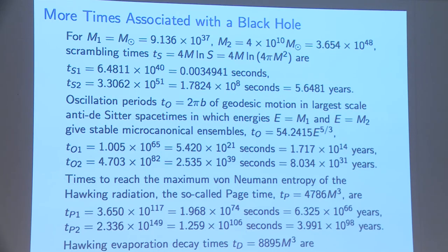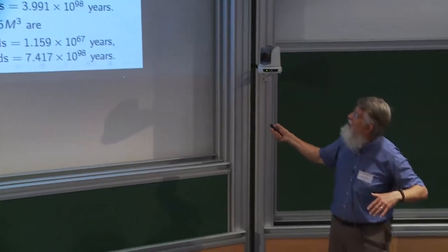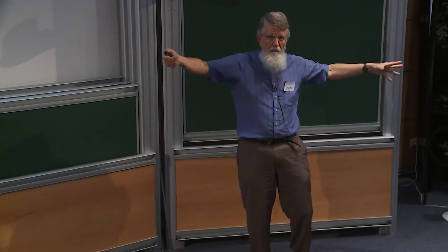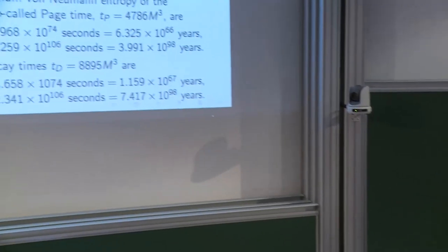Another scale: what anti-de Sitter space could hold this black hole in a microcanonical ensemble? The oscillation period for a particle in that AdS space gives another time scale. Because it goes as e to the five-thirds power, that's about 10 to the 65 Planck units, or about 10 to the 14 years for a solar mass. For a solar mass black hole, you'd need an AdS space with length scale less than this; otherwise it's more favorable for the hole to evaporate. For the 40-billion solar mass black hole, this gives eight times 10 to the 31 years.